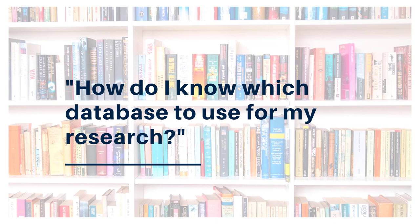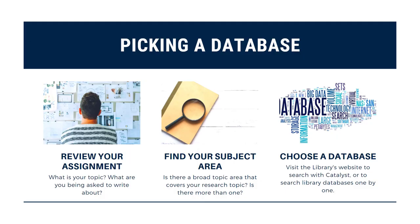But how do you find individual library databases and how do you choose the right one? First, review your assignment. Figure out what your topic is — what are you being asked to research? Find out if there are any requirements for the kinds of resources you need to use. For example, your assignment might require you to use journal articles that are peer-reviewed. If you're not sure, ask your instructor.